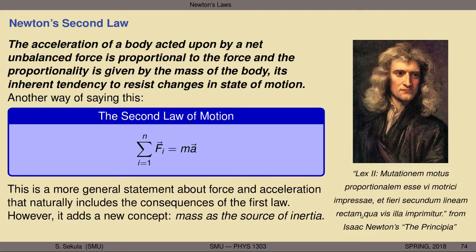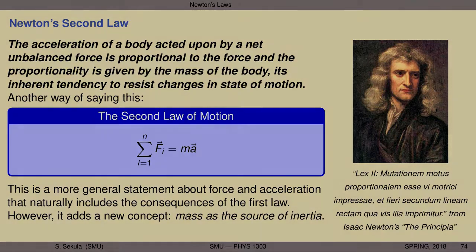If the sum of forces is zero, then acceleration must also be zero — consistent with the first law. The second law adds the new concept of mass as the source of inertia. As we'll see later in the course, there's another kind of mass you can define and you can ask whether these are the same mass. This is the very famous equation that fits on a t-shirt — F equals MA — and it is one of the laws of nature, reliably observed over and over again, relating forces, accelerations, and the resistance to change in state of motion observed in bodies in the natural world.